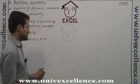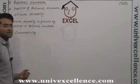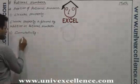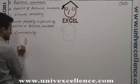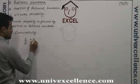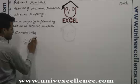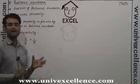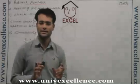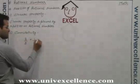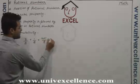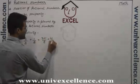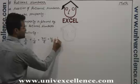Let's verify commutativity for rational numbers. Take the example three by eight plus one by eight. Since the denominators are the same, we add the numerators: three plus one by eight, which gives four by eight. In its lowest form, this is one by two, since four cancels with eight.